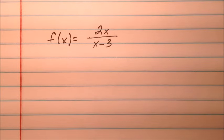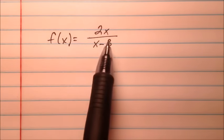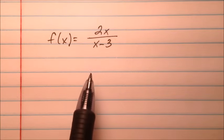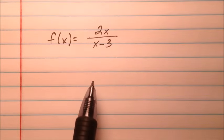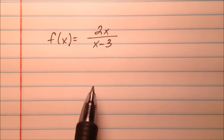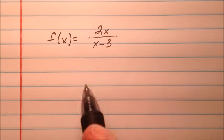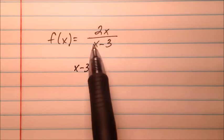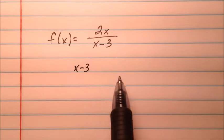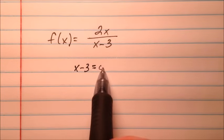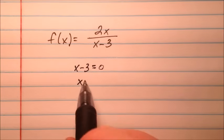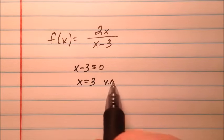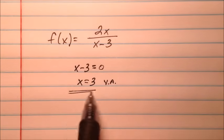The rule for finding vertical asymptotes is you take the denominator and set it equal to 0, and all the values you get are going to be vertical asymptotes, as long as they're non-removable discontinuities. We can't cancel x minus 3 with the numerator, so it's non-removable. Setting it equal to 0, we get x equals 3 — that's our vertical asymptote.